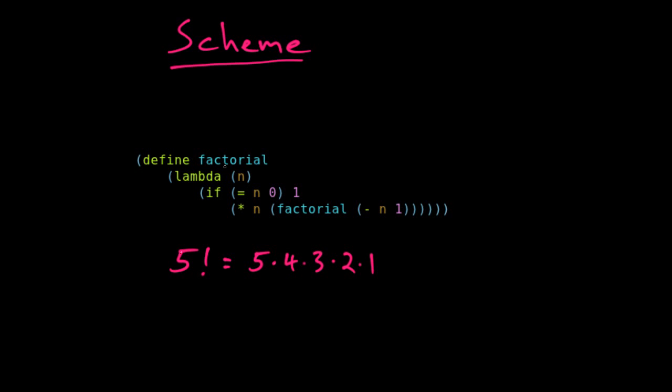The definition here, factorial is a function that takes an argument n. So this is the name of the function. This is our way we define a function. Here is the input argument.